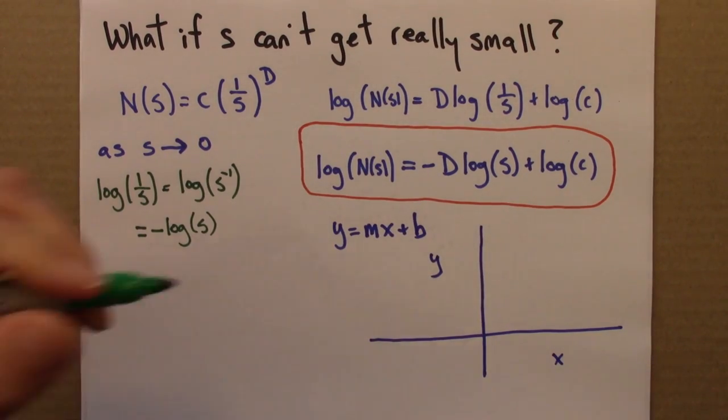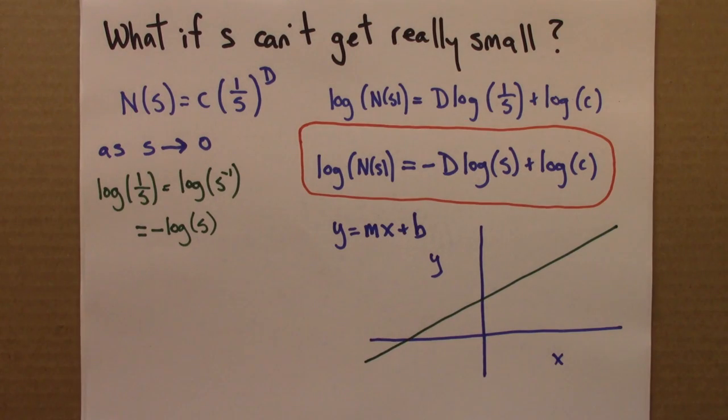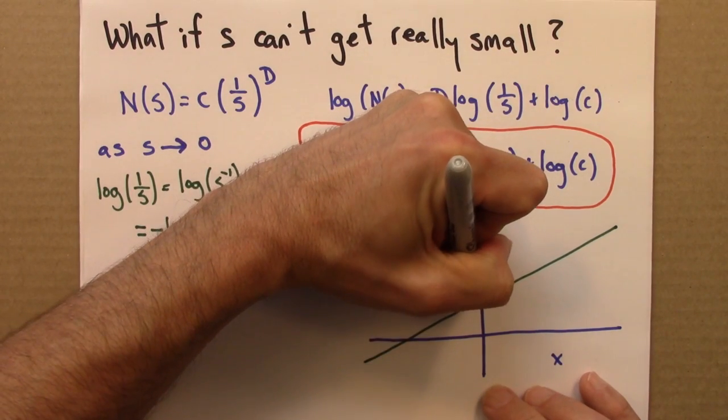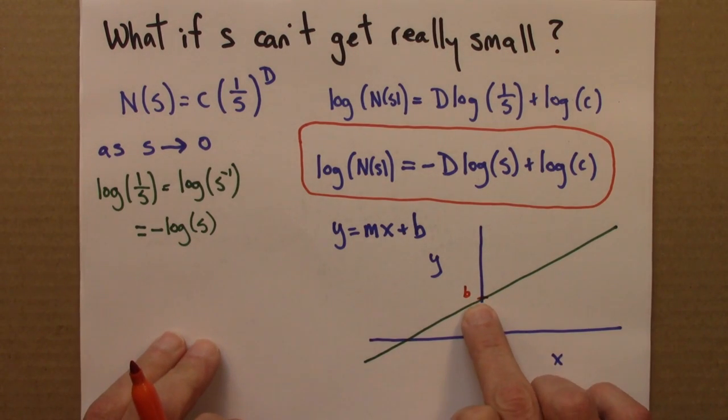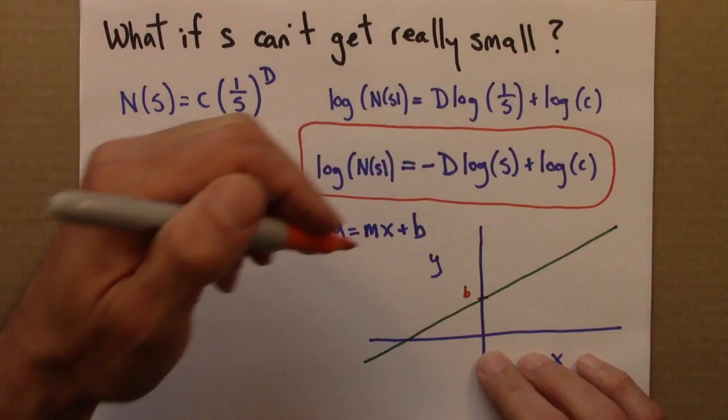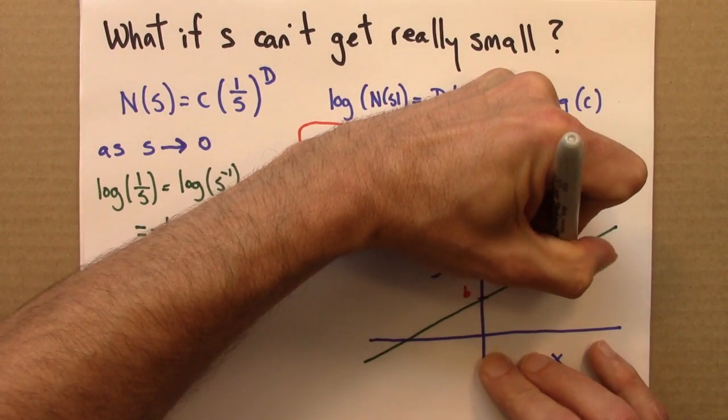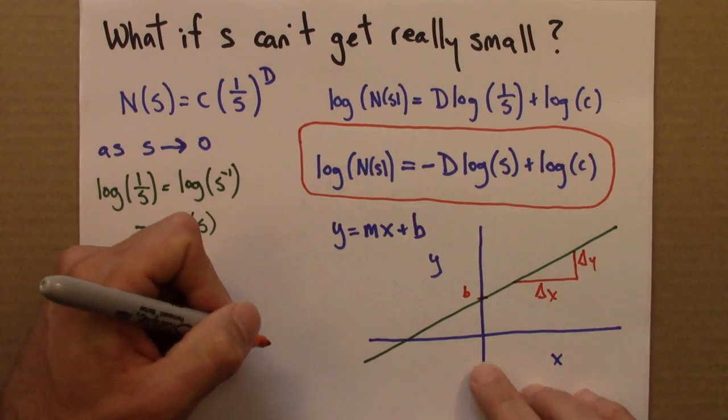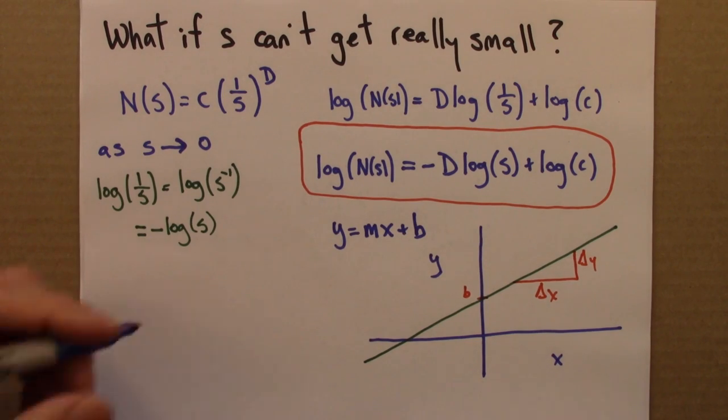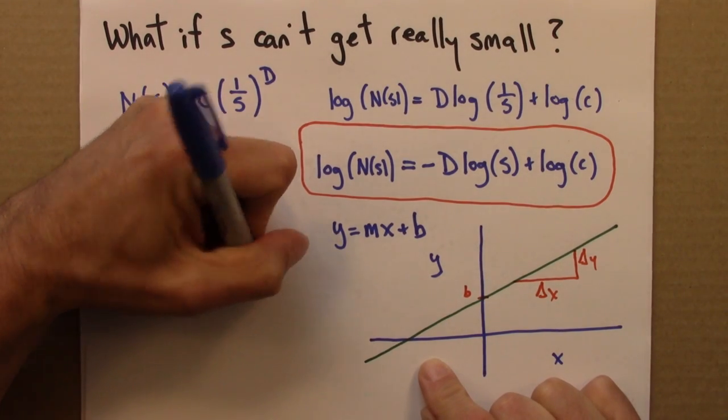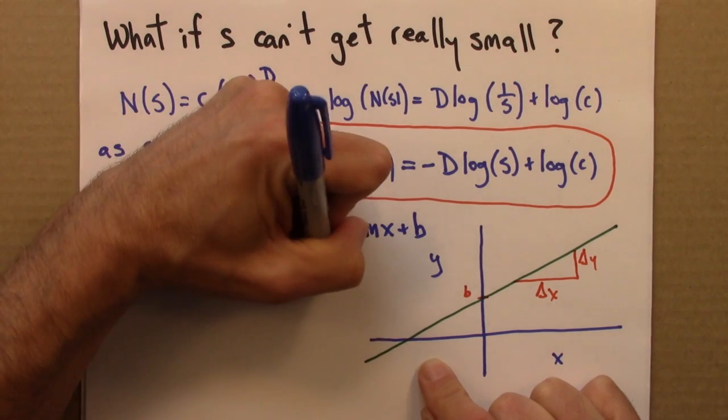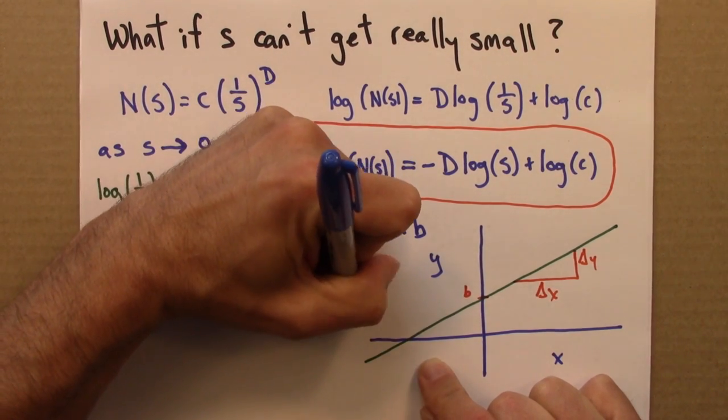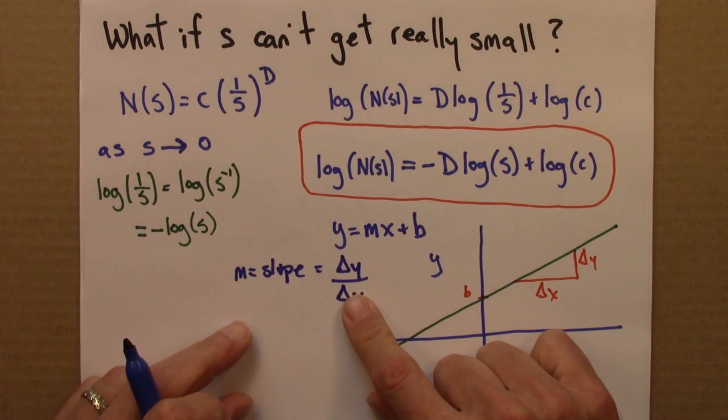So that would look like this. So b is the y-intercept where the line crosses the y-axis. And m is the slope, which is change in y over change in x.